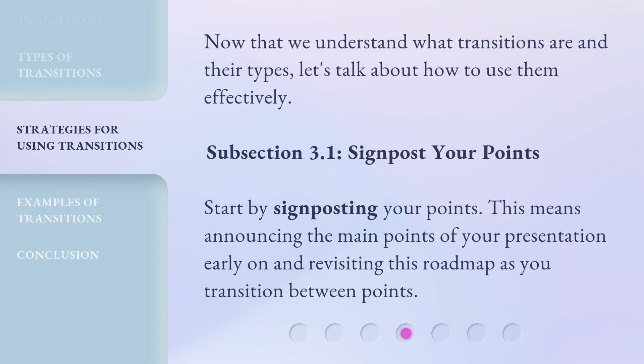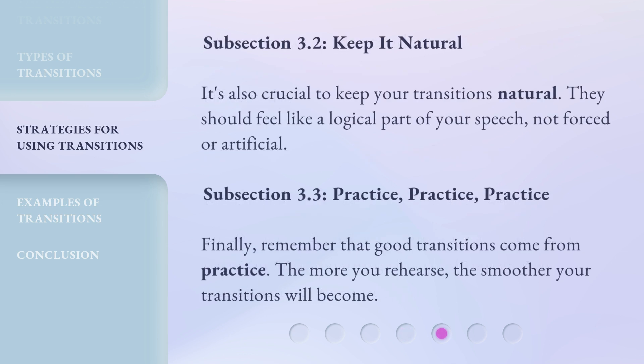Now that we understand what transitions are and their types, let's talk about how to use them effectively. Subsection 3.1: Signpost your points. Start by signposting your points — this means announcing the main points of your presentation early on and revisiting this roadmap as you transition between points. Subsection 3.2: Keep it natural. It's also crucial to keep your transitions natural. They should feel like a logical part of your speech, not forced or artificial.